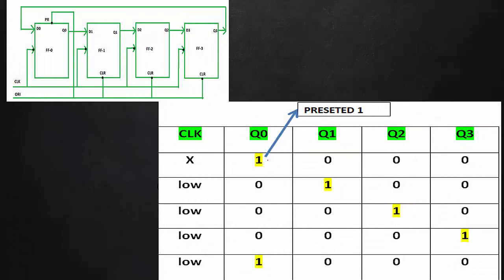If we initialize, we have 1, 0, 0, 0. Then if we apply the next clock, here is 0, 1, 0, 0. In the second case, the next clock is applied — here is 0, 0, 1, 0, then 0, 0, 0, 1. The 1 circulates through the bit positions. So you can see 1 moving with the ring counter.